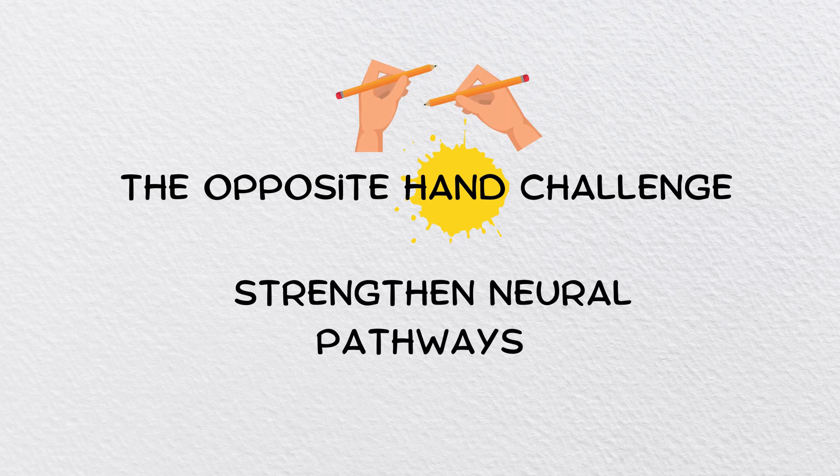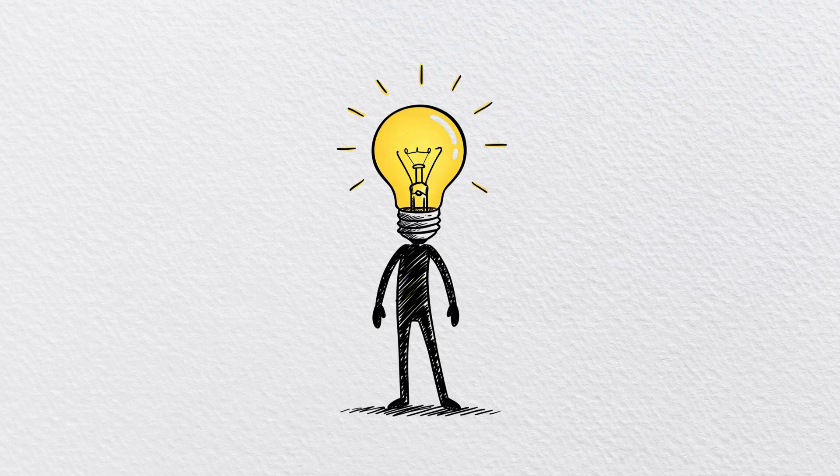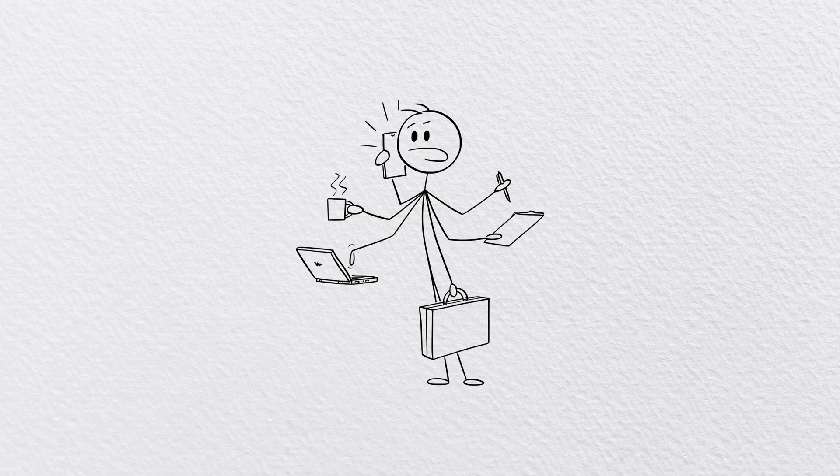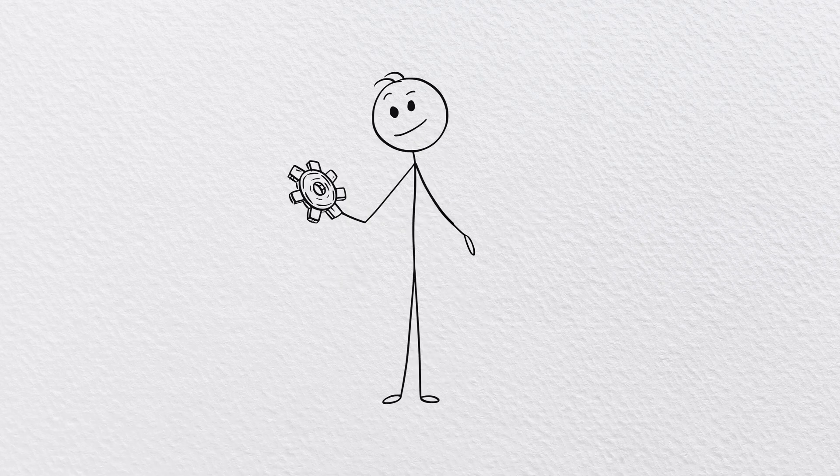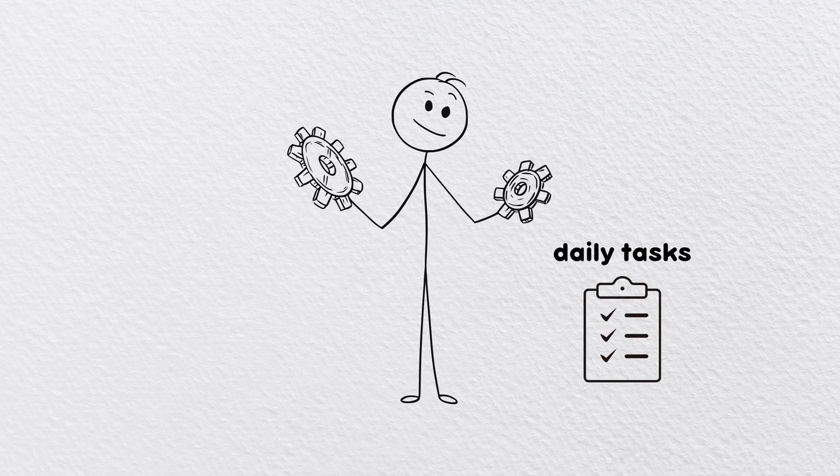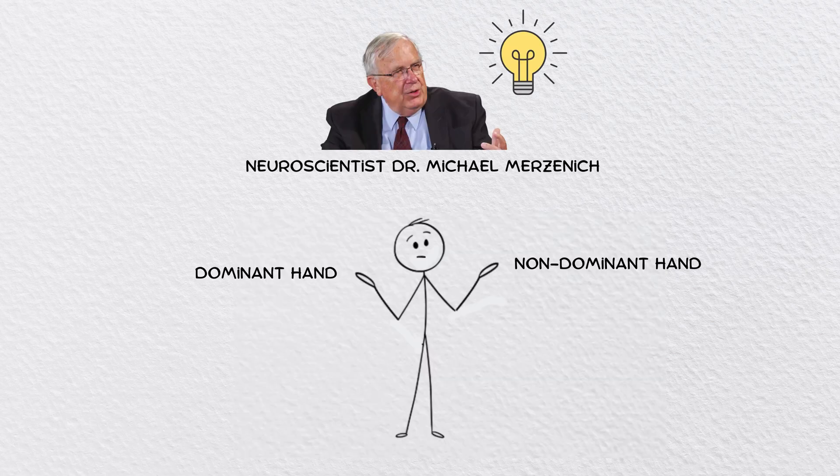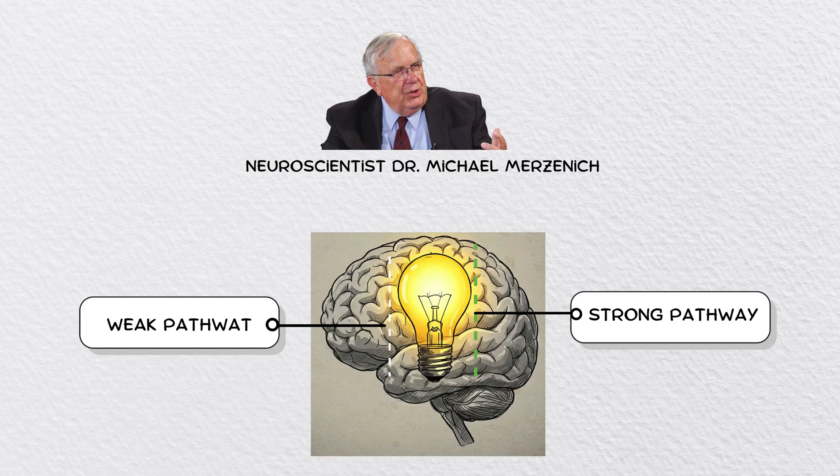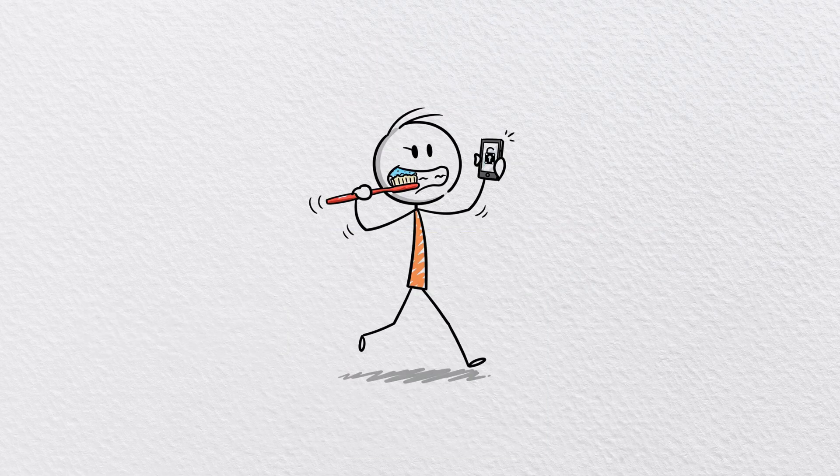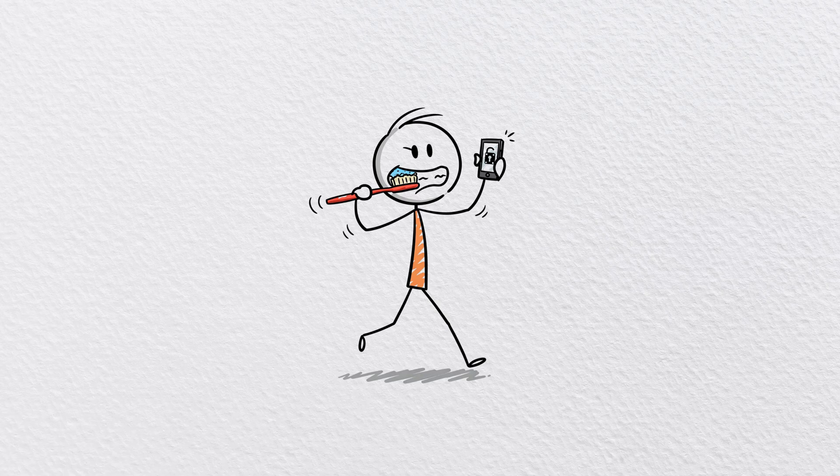The opposite hand challenge: strengthen neural pathways. Your brain thrives on new challenges. One of the easiest ways to build stronger neural connections is to use your non-dominant hand for daily tasks. Neuroscientist Dr. Michael Merzenich found that using your non-dominant hand forces the brain to form new neural pathways. He suggests trying this when brushing your teeth or unlocking your phone.